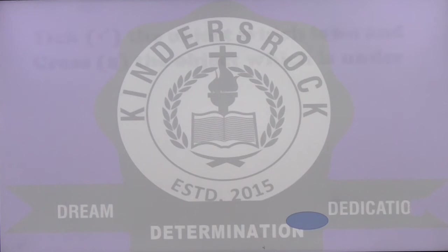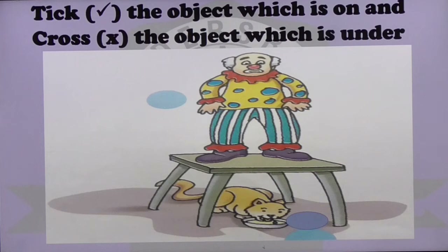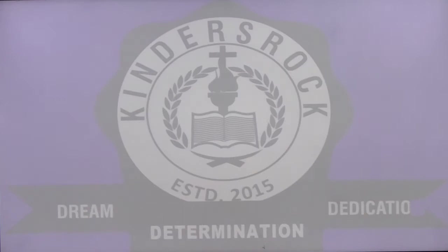Tick the object which is on and cross the object which is under. There we have a joker and a girl standing on the table and the pussy cat sitting under the table. So on the table is the joker uncle, and under the table is the pussy cat.